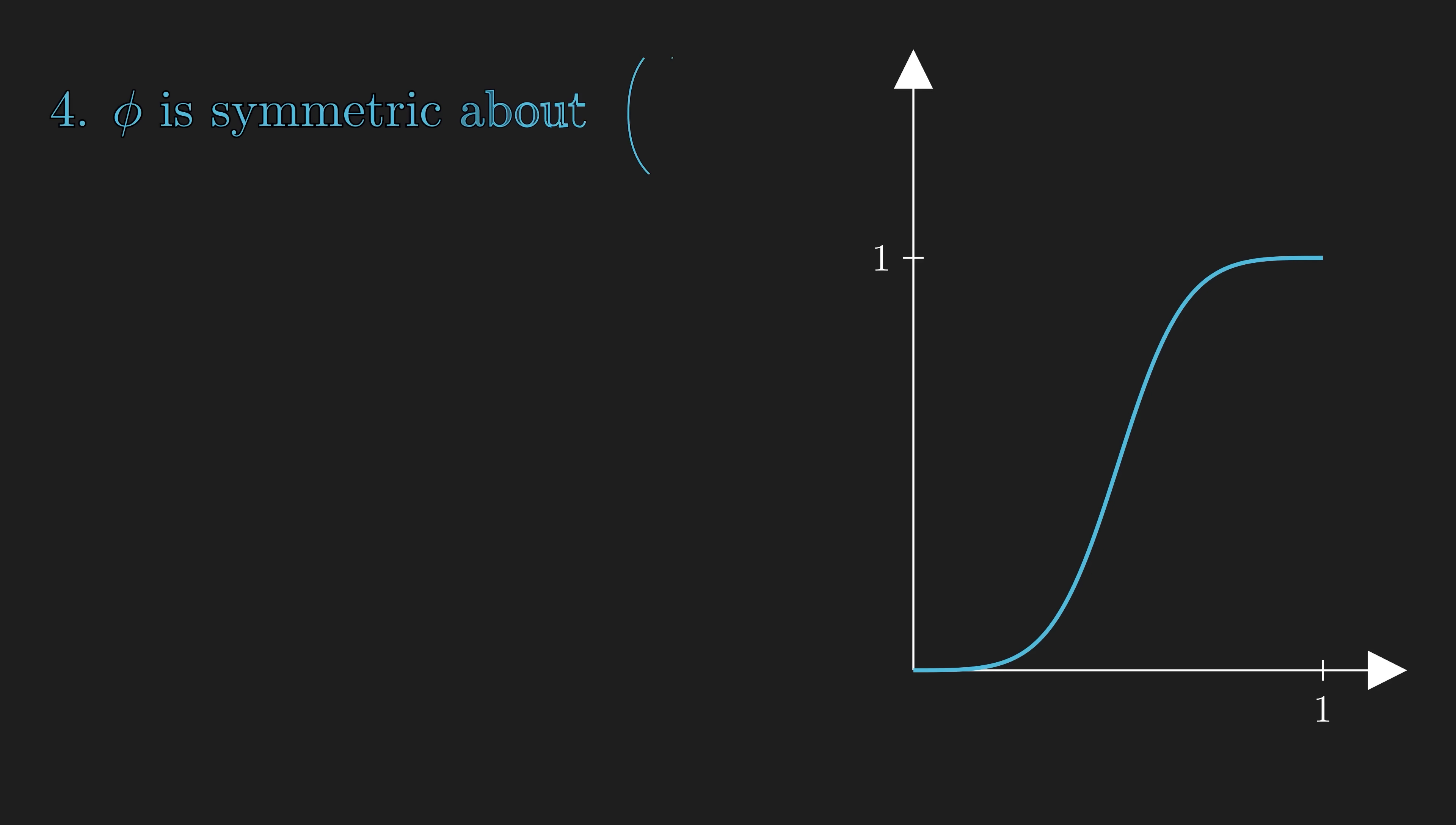Now, to the long awaited fourth property, phi is symmetric about the order pair (1/2, 1/2). Or equivalently, if we shift the function down by 1/2, and left by 1/2, then the function is odd.